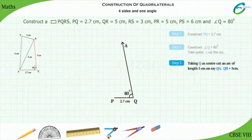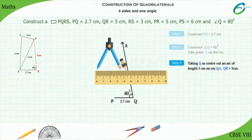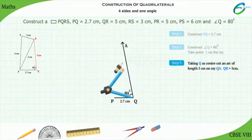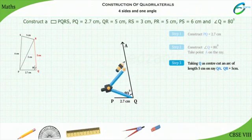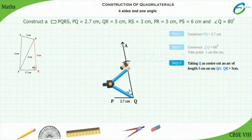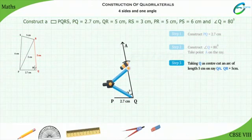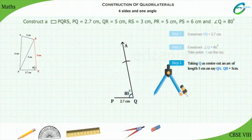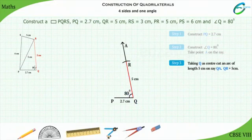Step 3: QR is equal to 5 cm. Hence, placing the compass pointer at point Q, cut an arc of length 5 cm on ray QA. Name this point as R such that QR is equal to 5 cm.